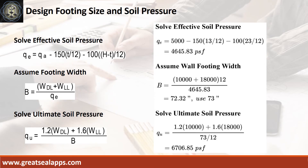Given allowable soil pressure of 5,000 PSF, assumed footing depth of 13 inches, and depth from natural grade line of 3 feet, the effective soil pressure is 4,645.83 PSF. Given uniform dead load of 10,000 pounds per foot and uniform live load of 18,000 pounds per foot, the assumed footing width is 73 inches and the ultimate soil pressure is 6,706.85 PSF.